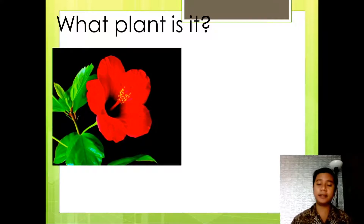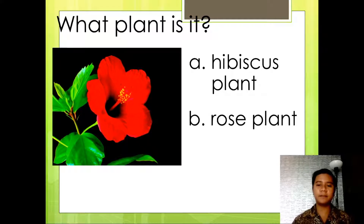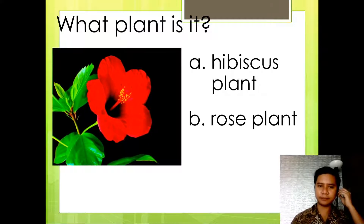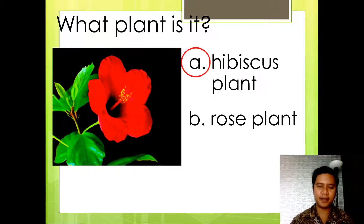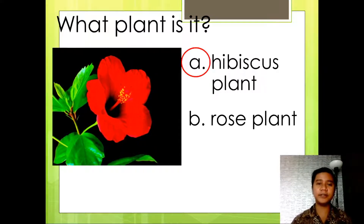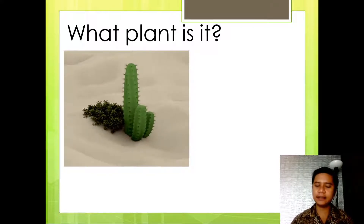What plant is it? The choices are: Letter A, hibiscus plant, or Letter B, rose plant. So what do you think? What plant is it? The correct answer is Letter A — hibiscus plant! Yes, very good. So next, question number 2: what plant is it?